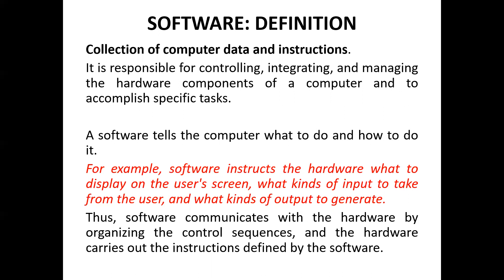Software is responsible for controlling, integrating, and managing the hardware components of a computer to accomplish a specific task. A software tells the computer what to do and how to do it. For example, software instructs the hardware what to display on the user's screen, what kind of input to take from users, and what kinds of output to generate. The software communicates with the hardware by organizing control sequences, and the hardware carries out the instructions defined by the software.